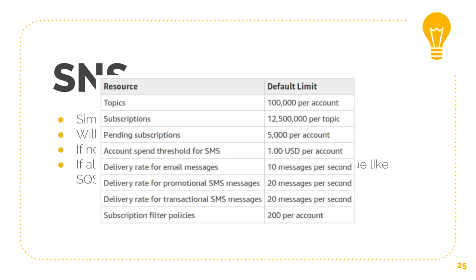Just as a quick indication of how big these things can scale — here you can see the default account limits on AWS. All of these values you could increase if you wanted to, but the two we're interested in are topics and subscriptions. You can have about 100,000 topics per account, which is quite a lot, and about 12.5 million subscriptions per topic. And AWS, if you went to NASDAQ, could actually increase these values for you.